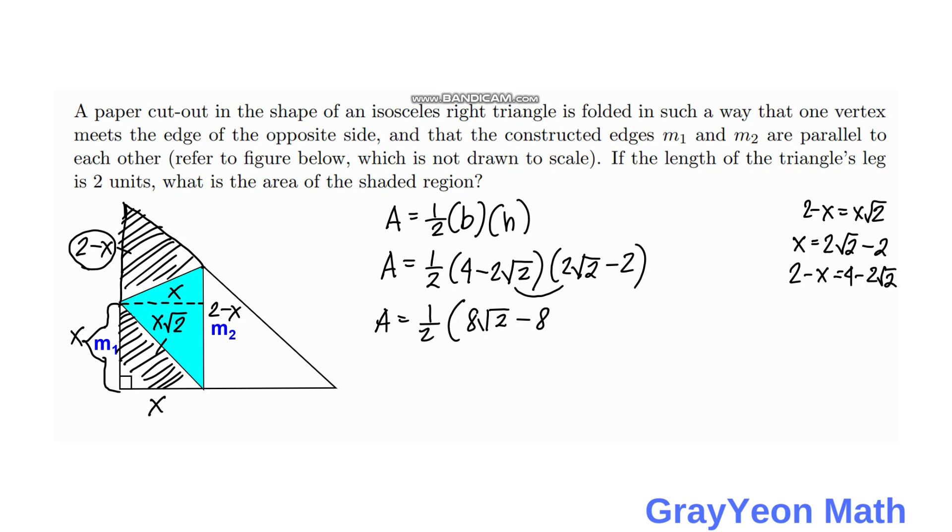Then same with these two outer terms, that would be negative 8. Then for these inner terms, we have positive 4√2. Then this becomes area is equal to 1/2 times 8√2 plus 4. That would be 12√2 minus 16.